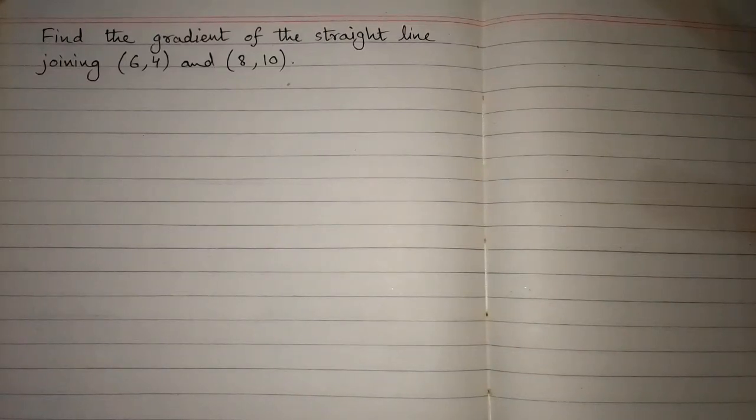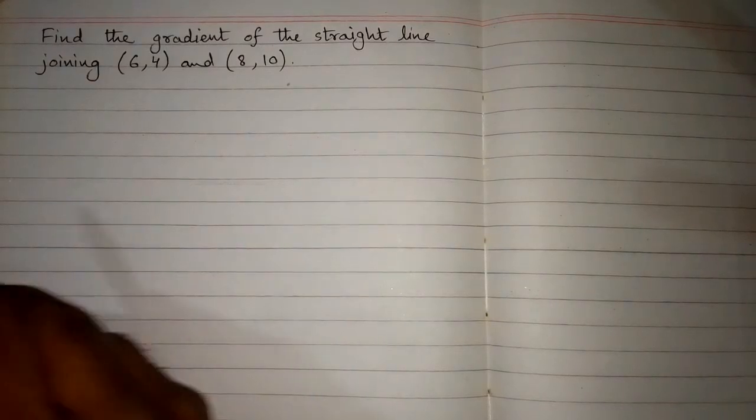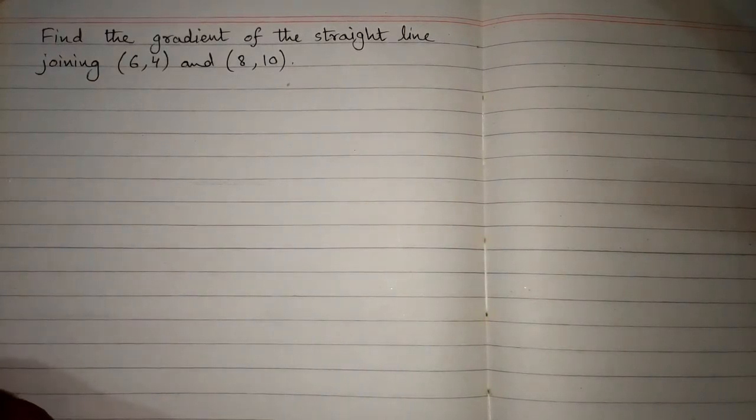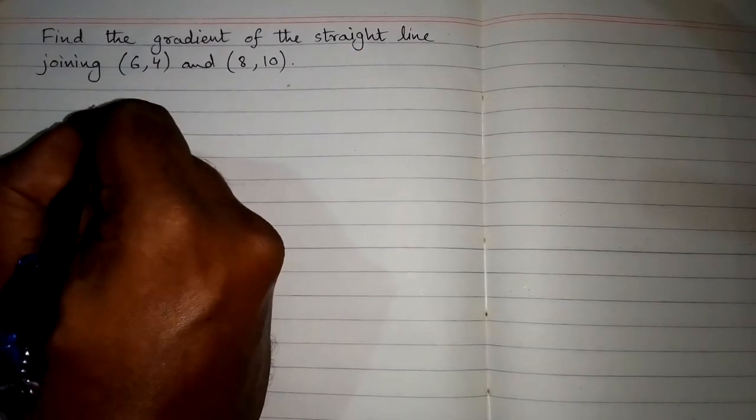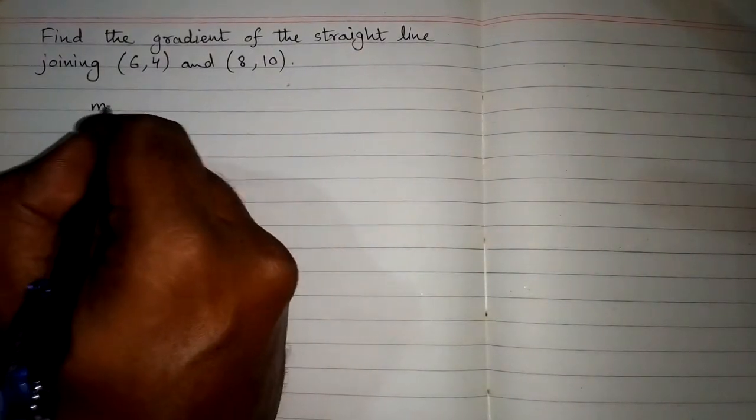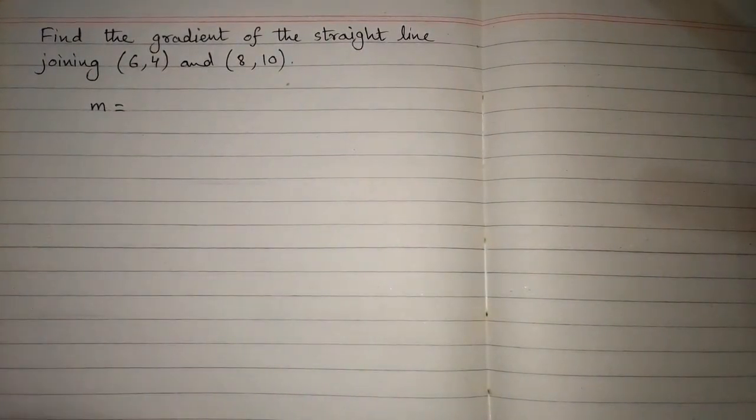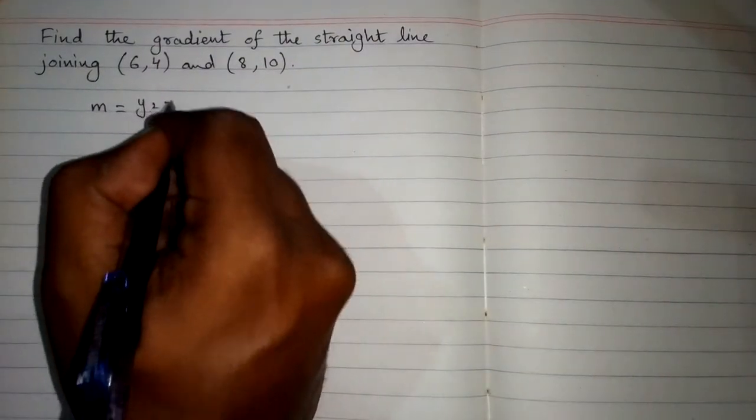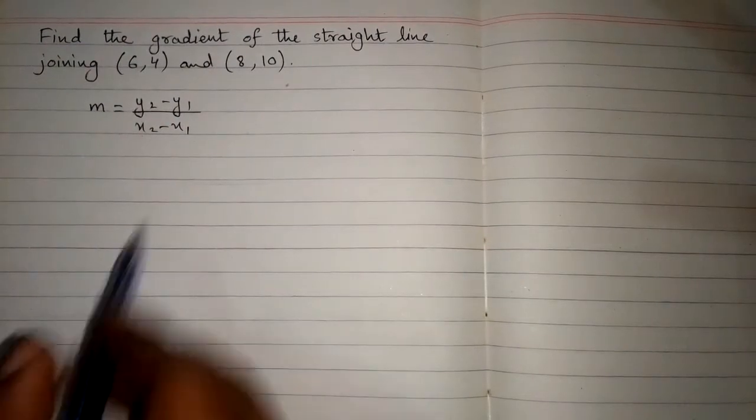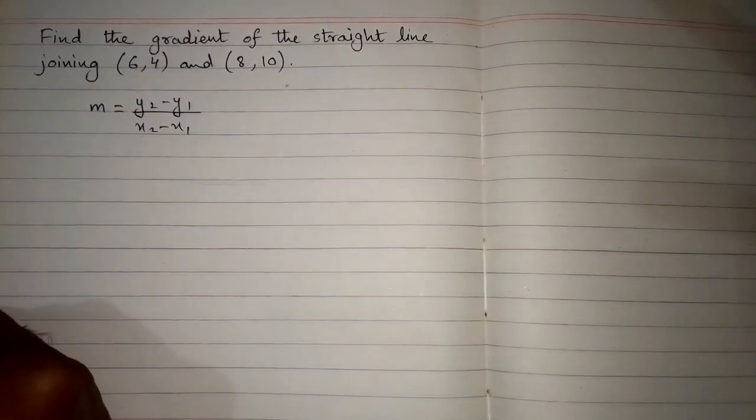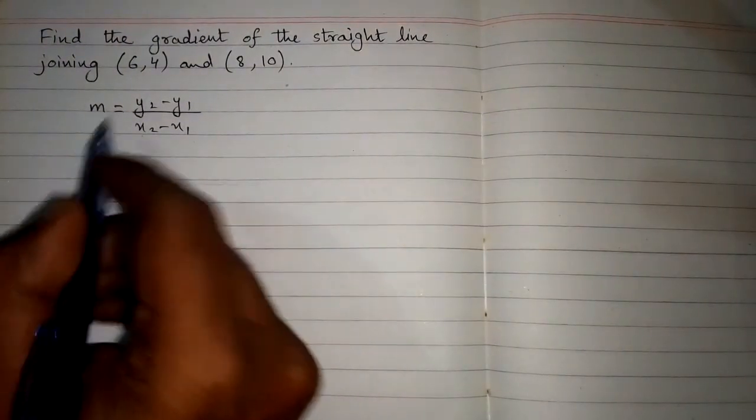In this video we will find the gradient of the straight line joining the point (6,4) and (8,10). The gradient of line or slope of the line is M equals (y2 minus y1) upon (x2 minus x1). We will use this formula to find the gradient of a line.